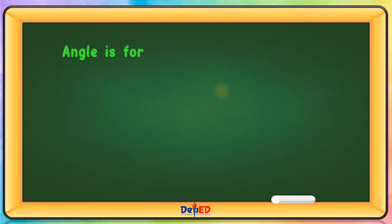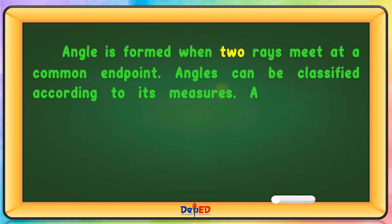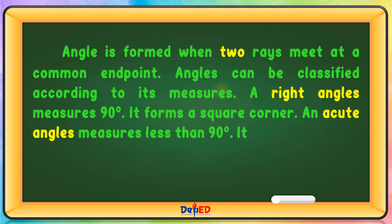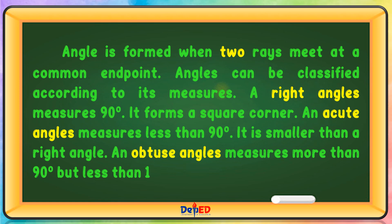An angle is formed when two rays meet at a common endpoint. Angles can be classified according to their measures. A right angle measures 90 degrees and forms a square corner. An acute angle measures less than 90 degrees and is smaller than a right angle. An obtuse angle measures more than 90 degrees but less than 180 degrees.